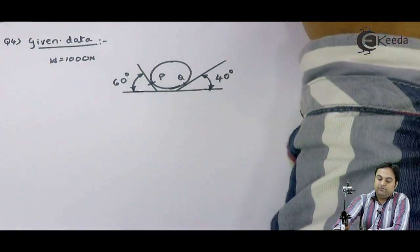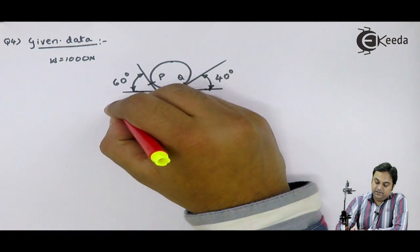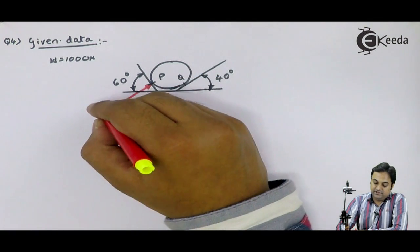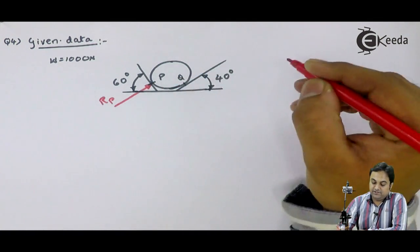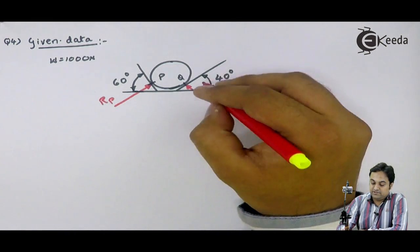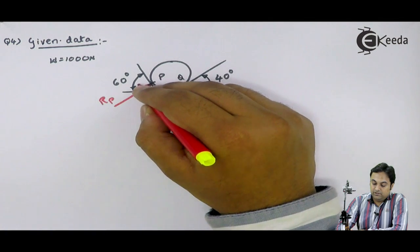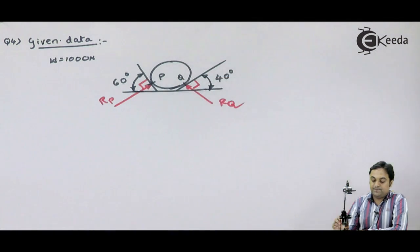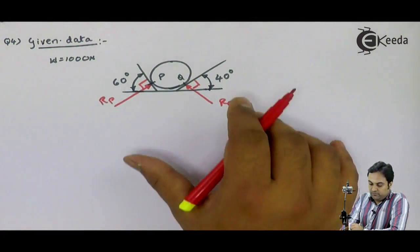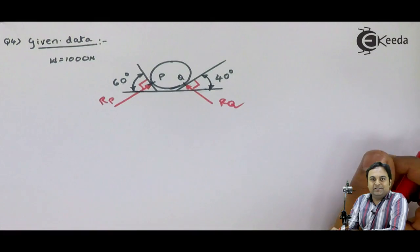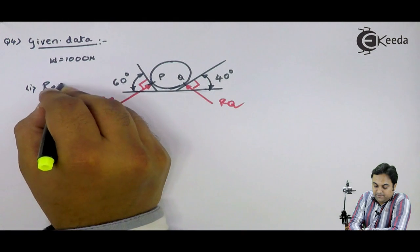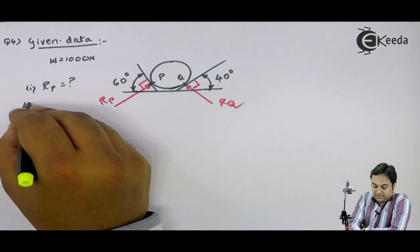In this diagram, reaction at P will be perpendicular to the surface, I'll write this as R suffix P, reaction at P. Reaction at Q would be perpendicular to its surface, I'll write it as R suffix Q. Both reactions are perpendicular to the surface, so we will be drawing the free body diagram for this sphere.